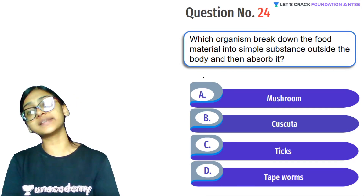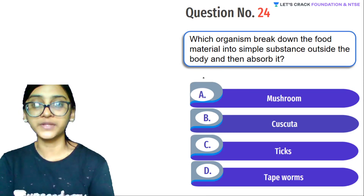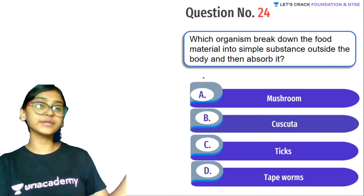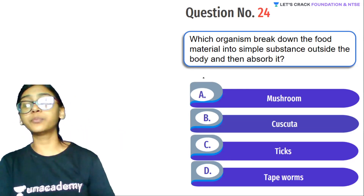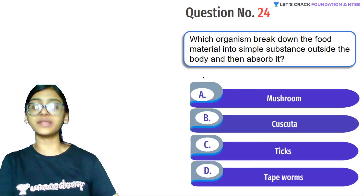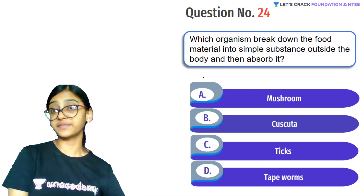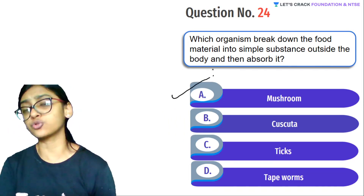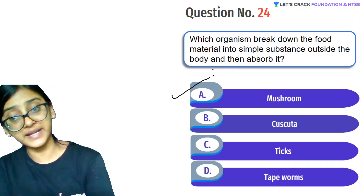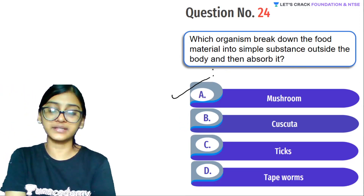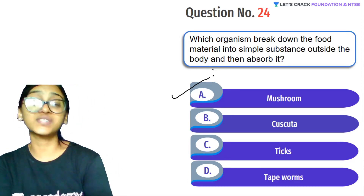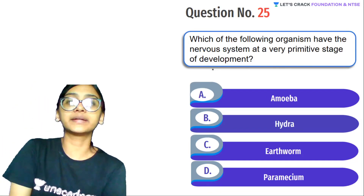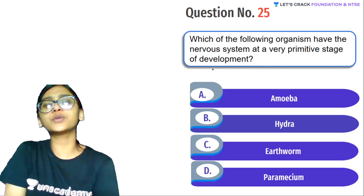Next question: Which organisms break down food material into simple substances outside the body and then absorb it? Basically the organism breaks down food outside its body and then absorbs it — like cooking and then eating. Options include saprotrophs, mushroom, Cuscuta, ticks, and tapeworm. Cuscuta is a parasite, ticks are parasitic insects, tapeworm is a parasite. Saprotrophs are the ones that break down food outside and then absorb it. Answer: Saprotrophs.